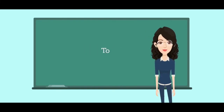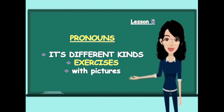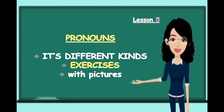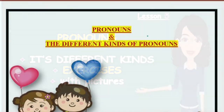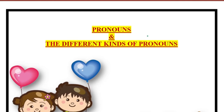Hello everybody, welcome to Word Shard. Hello children. In the last class we had done the chapter on nouns. You know that pronouns are a part of nouns. I have circled the nouns — we have done it clearly. We know that there are various types of nouns, for example common noun, proper noun, collective noun, abstract noun.